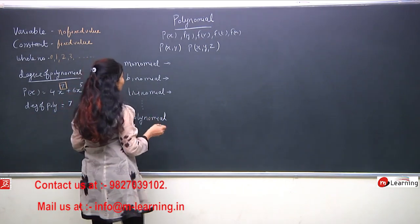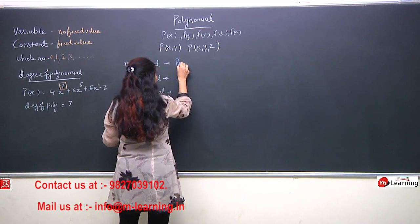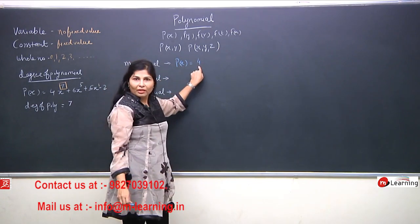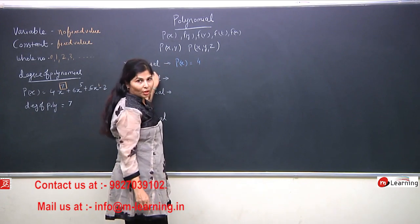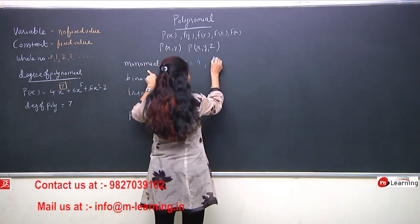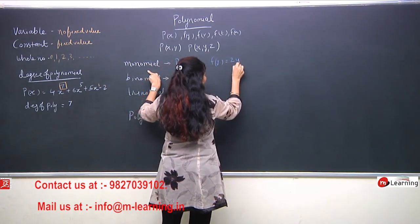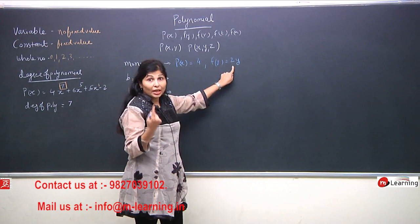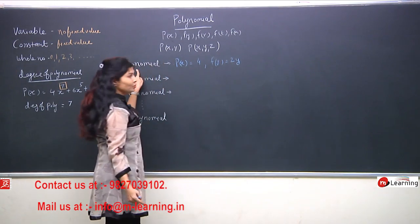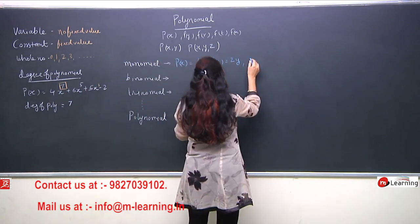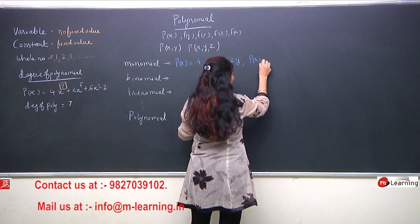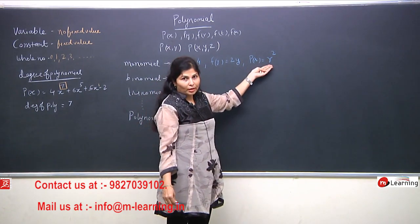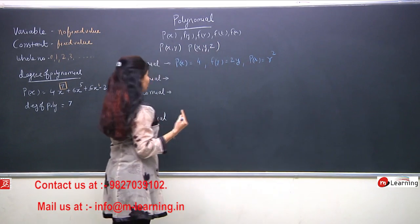Let me give examples of monomial. I have polynomial Px equal to 4 — there is only one term, which is 4, so this is an example of a monomial. Another example: polynomial Fy where the term is 2y — again a single term, so this is also an example of a monomial. Another example: polynomial PR where the term is R squared — again one term, so this is an example of a monomial.